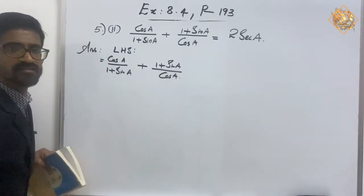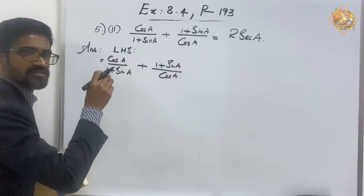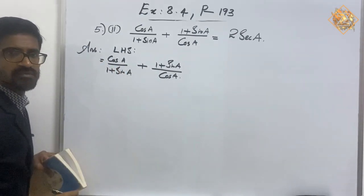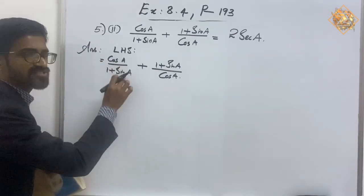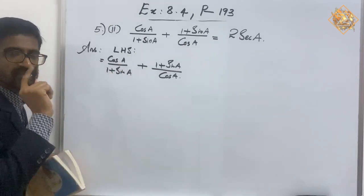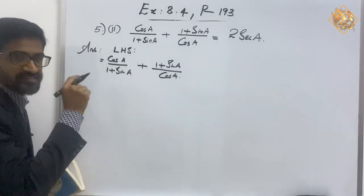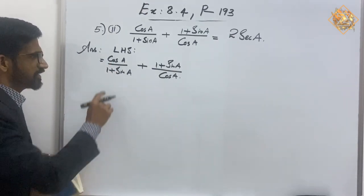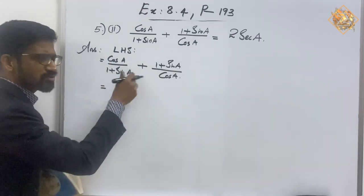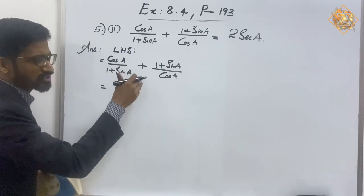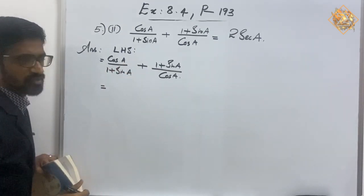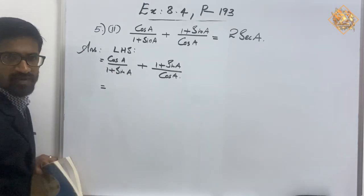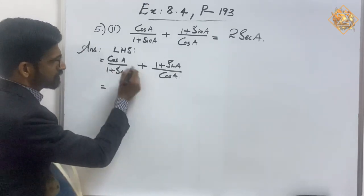This is the LHS part. Can we directly apply any identities here? No — because there are no square terms. Keep in mind we apply identities only when there are square terms for trigonometric functions. So first we need to do something here, like cross multiplication.